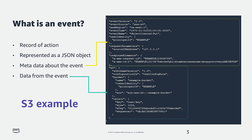For example, if someone saves a file to Amazon S3, an event is created containing the bucket the file was saved to and the key or name of the file. It will also contain data about when it was saved, the size of the file, and other metadata that helps developers to understand the event.